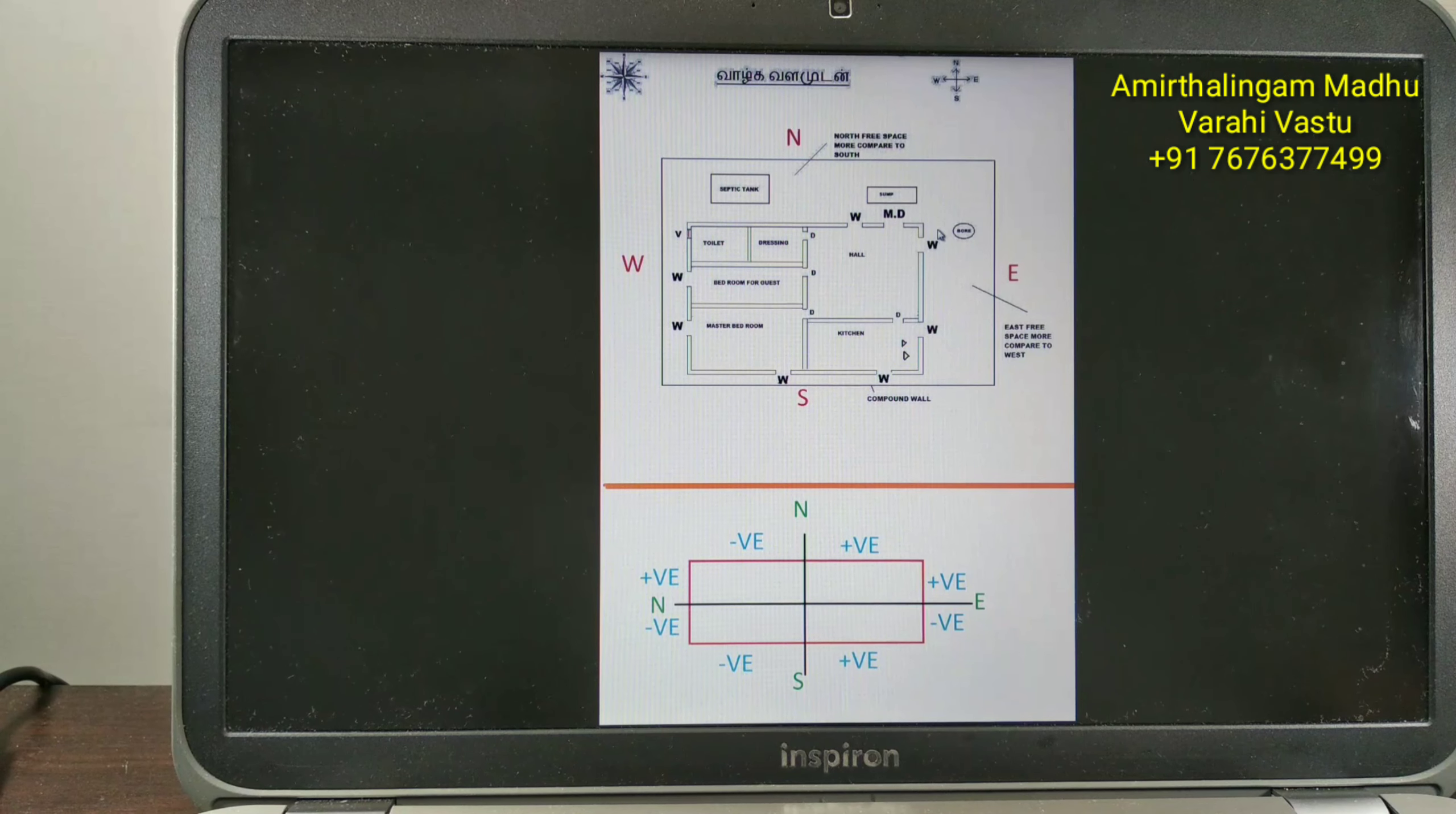Now we will see how to place the window. This is a typical Vastu drawing, north facing house. So direction is this is north, south, east and west.